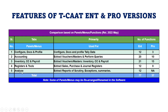Most importantly, the analyze panel with functions for ledger scrutiny, exceptions, and summaries — 12 key functions — is available only in the TCAT Enterprise version and not in the Pro version. The primary objective of the Pro version is to help you export masters and vouchers from Tally.